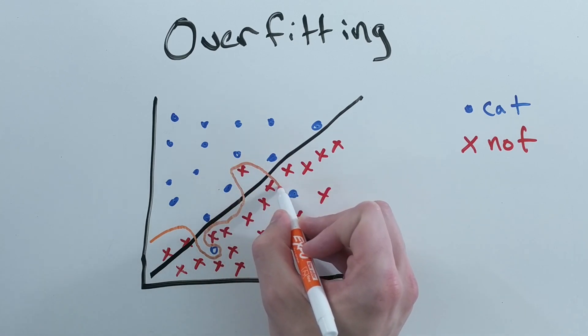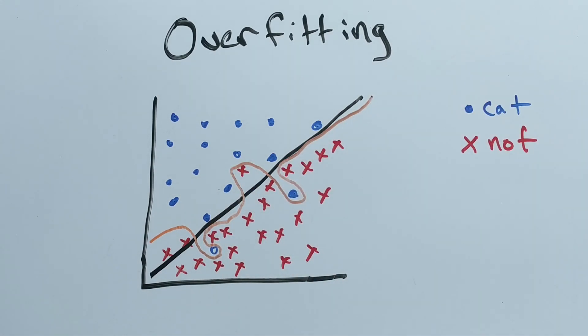On the other hand, an overfitted model might separate the two classes out like this, where it draws this really crazy scribble to try to make sure it gets all of the data on one side of the line.